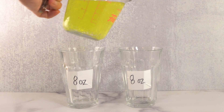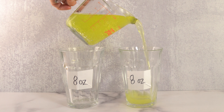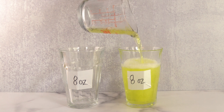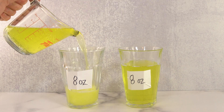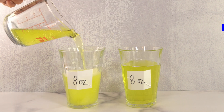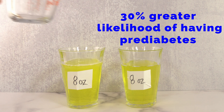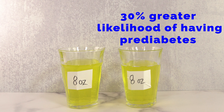What they found was that people who reported drinking more than two sugary drinks per day had a 30% greater likelihood of having prediabetes compared to people who said they drink less than one sugary drink per day.